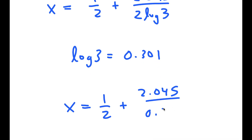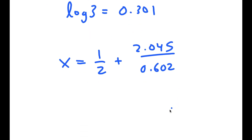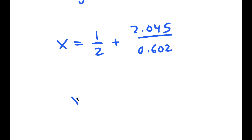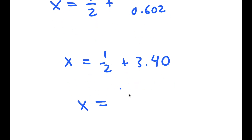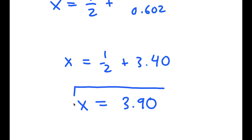And log 3 is equal to 0.602. So log of 111, which is 2.045, divided by 0.602 is equal to 3.397, which is the same thing as 3.40. So if I add one half to this, I get 3.90 as my solution.